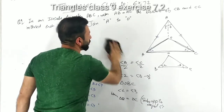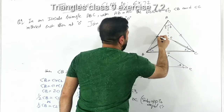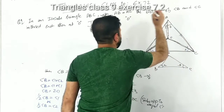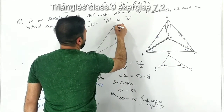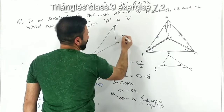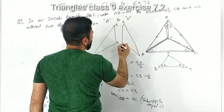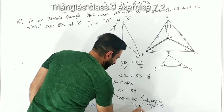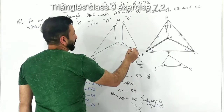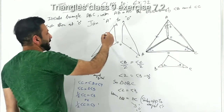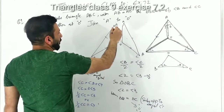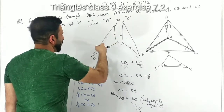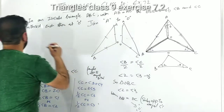For the second part, we will use two triangles: triangle AOB and triangle AOC. We just proved OB equals OC. And it was given that AB equals AC. Also AO is common to both triangles.